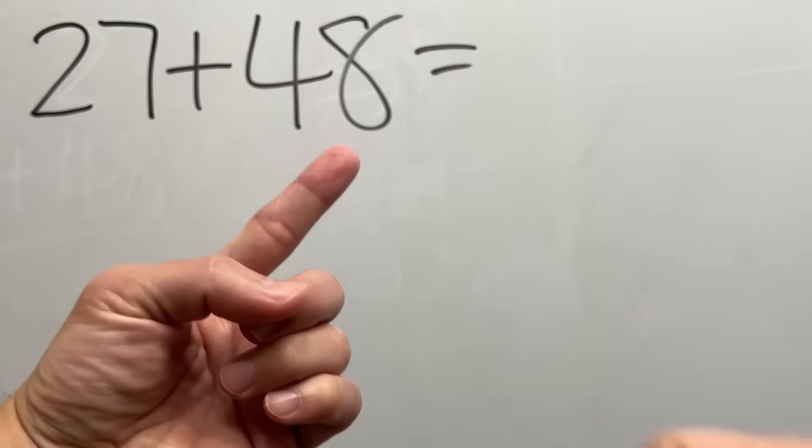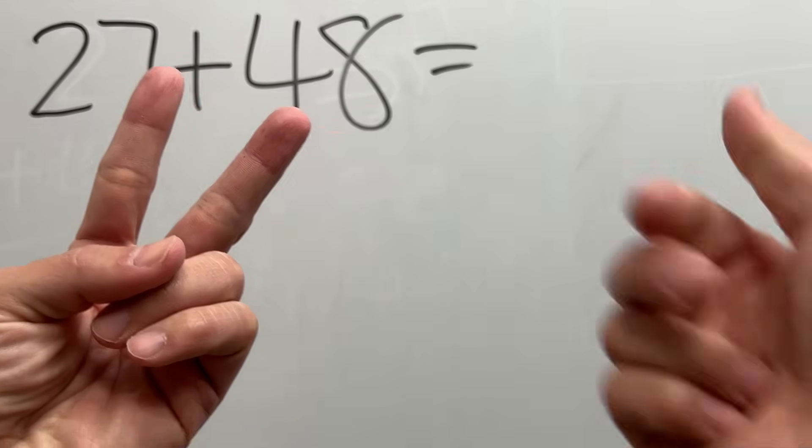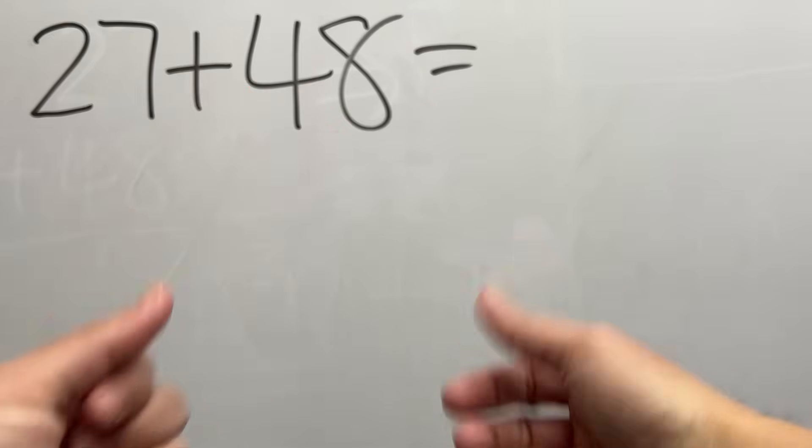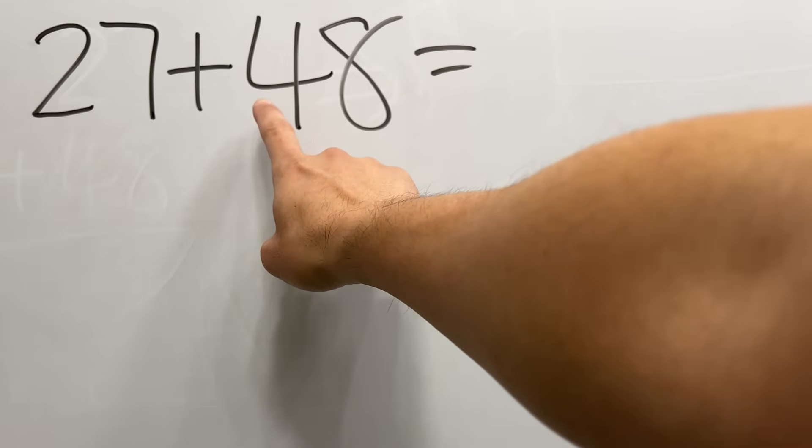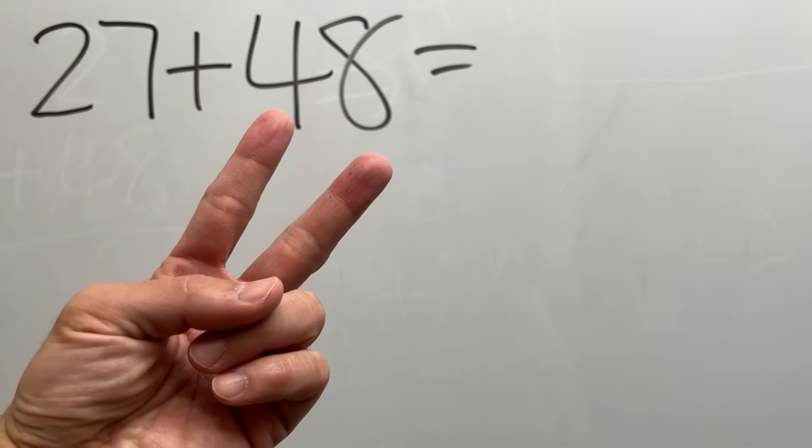So now 27 to me is like this: two, seven. That is 27. Now how do I do plus 48? I add the tenth digits first. So let's have a look: two plus four.